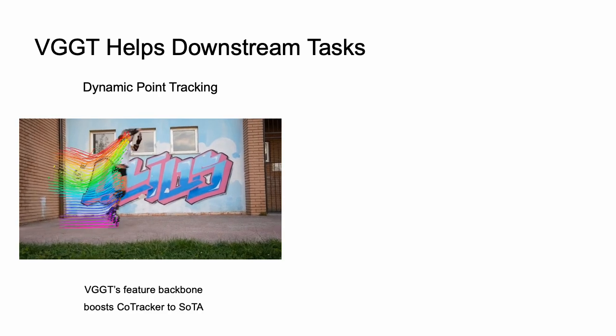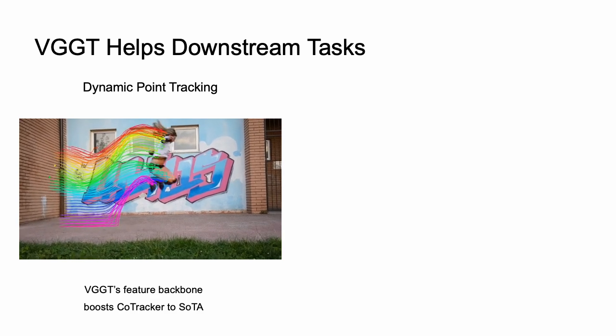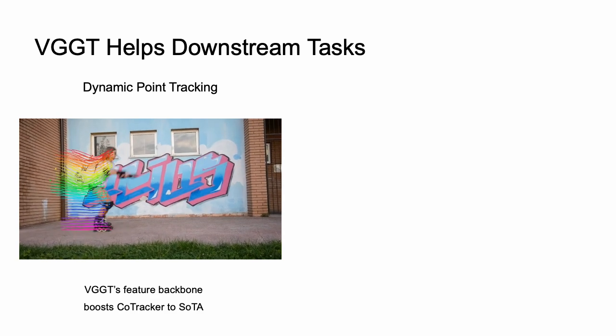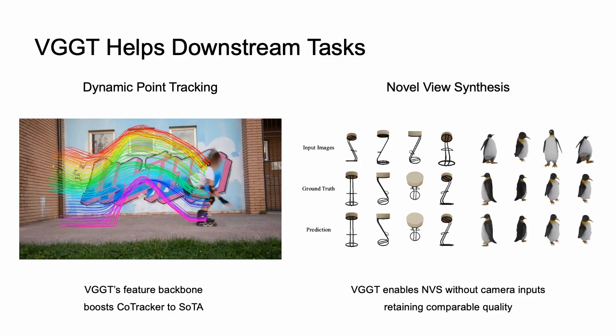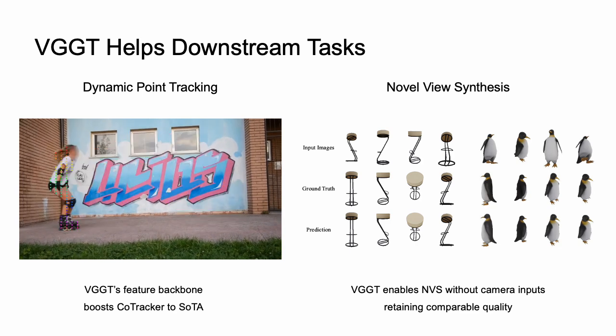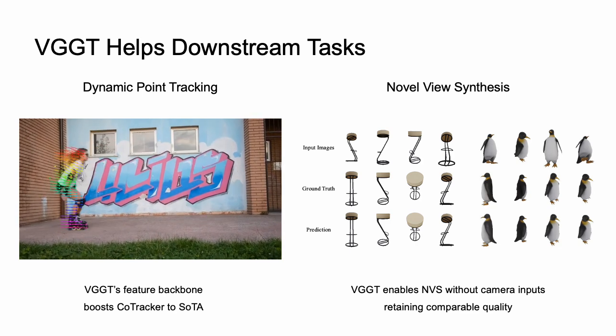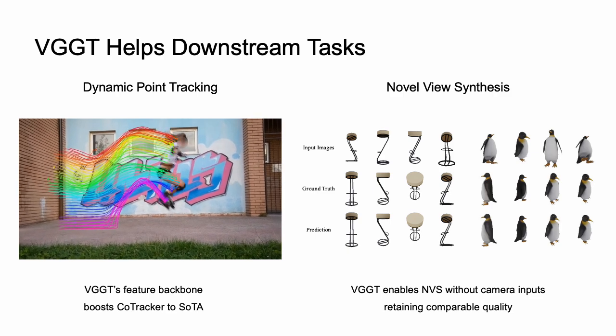Furthermore, to illustrate the power of VGG-Transformer, we use its feature backbone for downstream tasks with simple fine-tuning. On dynamic point tracking, although the input is highly non-rigid, our backbone enhances the tracker to state-of-the-art. On novel-view synthesis, we show that even without ground truth cameras as input, a novel-view synthesis model can achieve competitive quality to those with ground truth cameras.